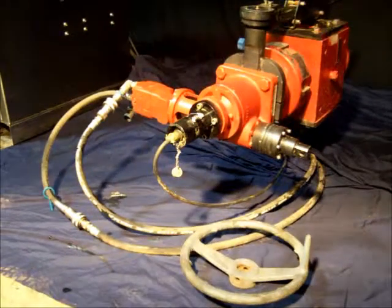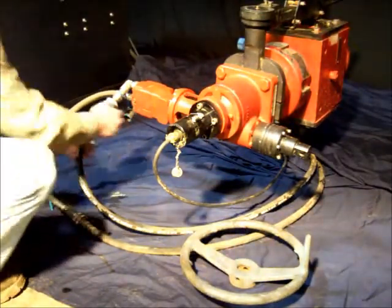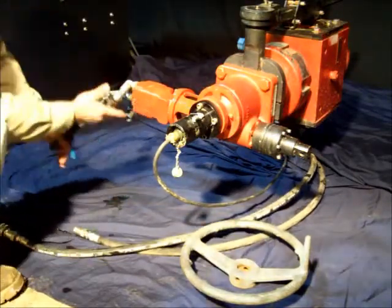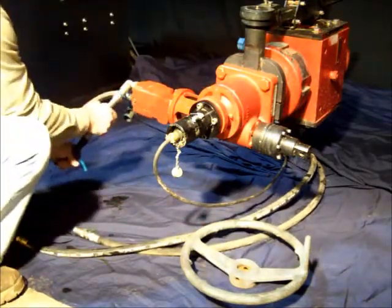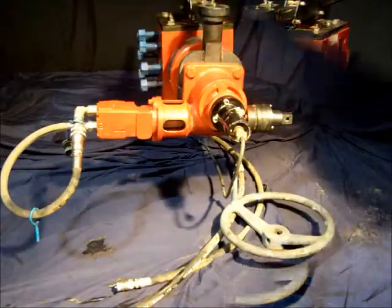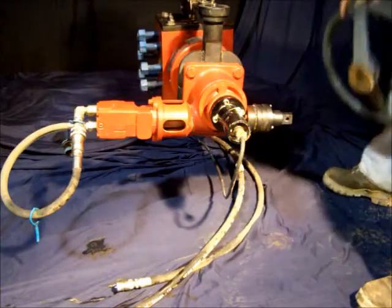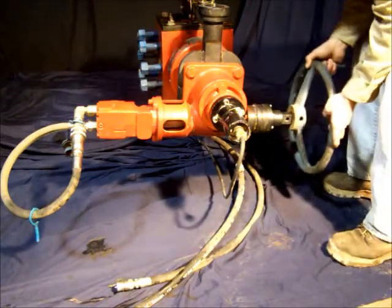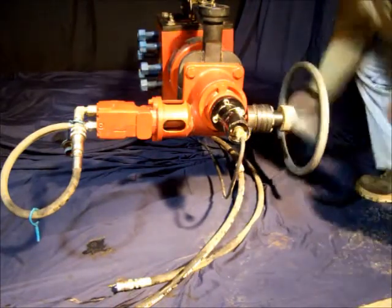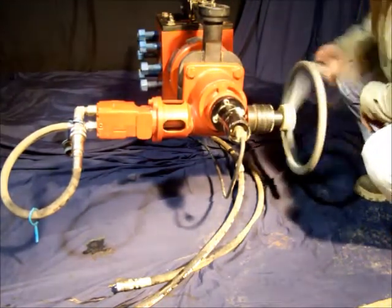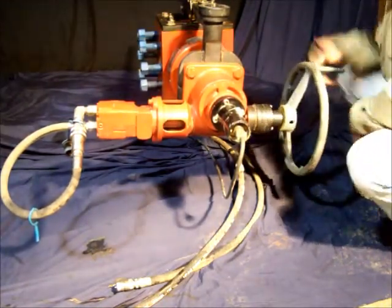If you need to operate the choke manually, you just disconnect your hydraulic lines, put it back into itself, then any wheel in your choke house will fit on and it just opens and closes the same way you would any other valve in your choke house.